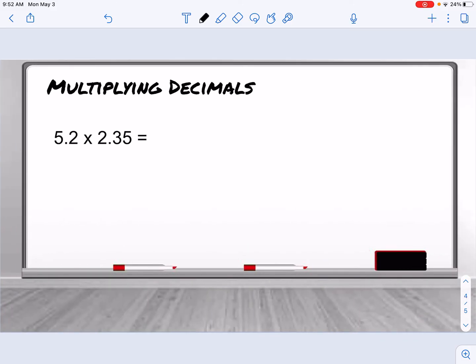Now multiplying decimals. We want to multiply the numbers like the decimal's not there. And then we're going to put our decimal back in the answer, the number of times it is in the problem. So here we have one, two, three numbers after the decimal. So our answer should have three numbers after the decimal.